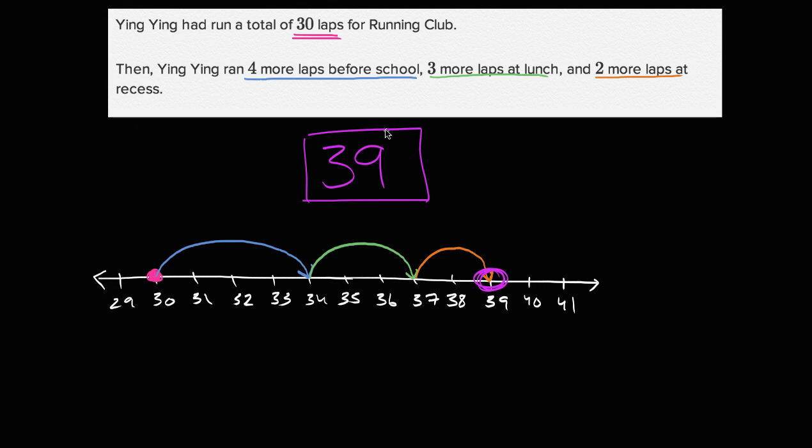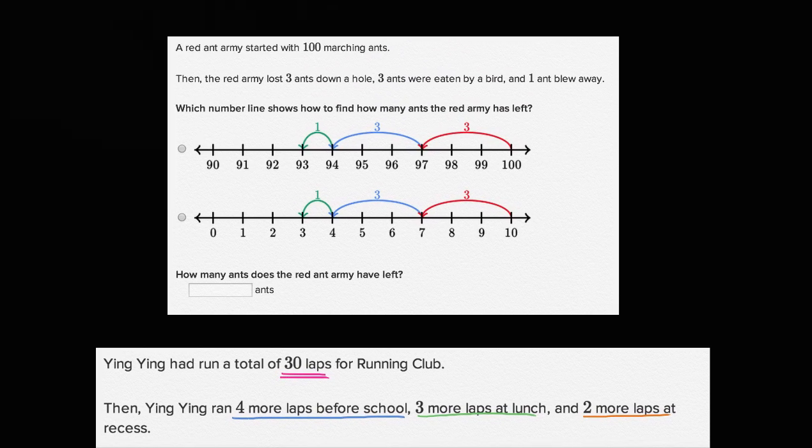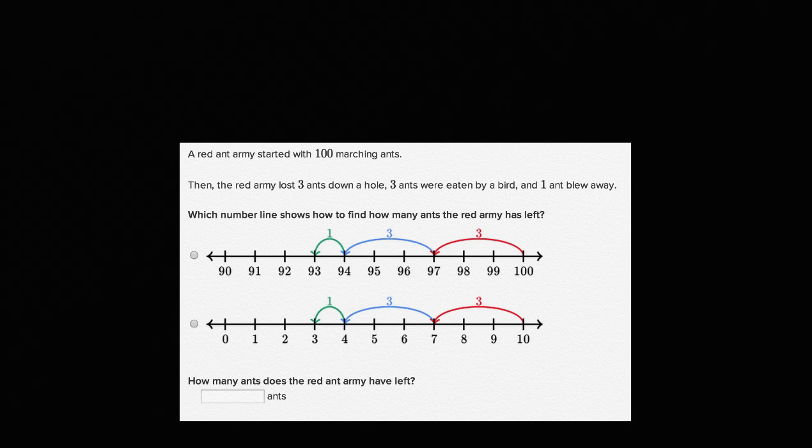Now let's do an exercise very similar to this that you might see on Khan Academy. So this one right over here. Let me get rid of the stuff about Ying Ying so we don't get confused. So this says, a red ant army started with 100 marching ants. So we're going to start with 100.